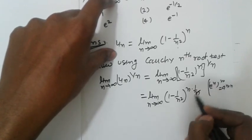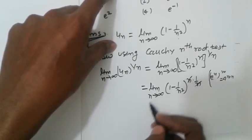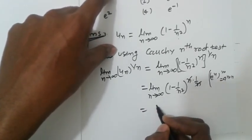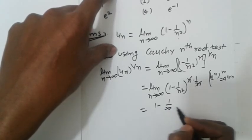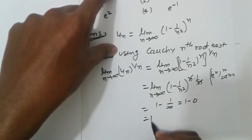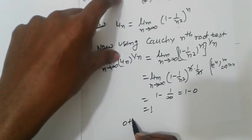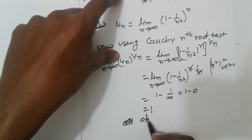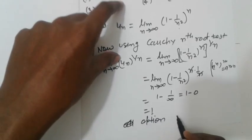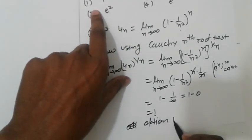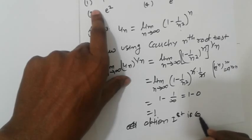Applying the limit: 1 - 1/infinity equals 1 - 0 equals 1. So option 1 is correct.